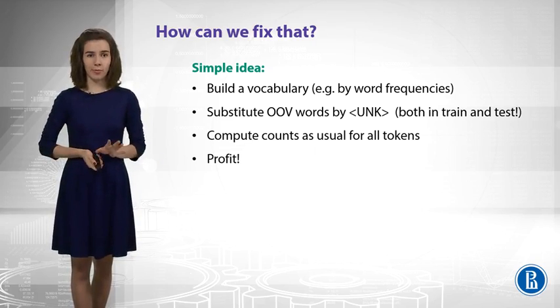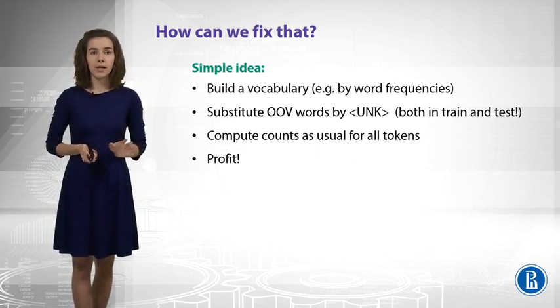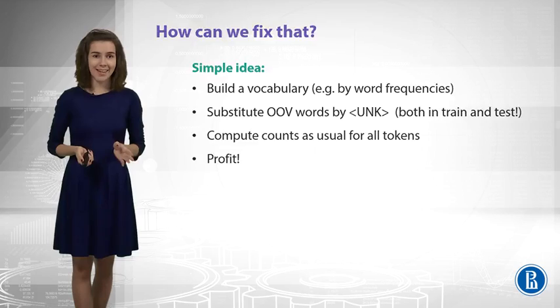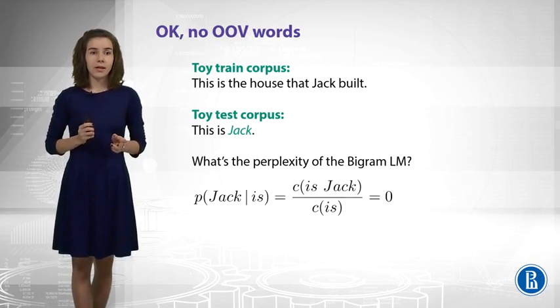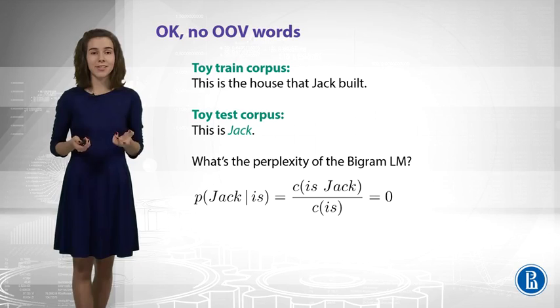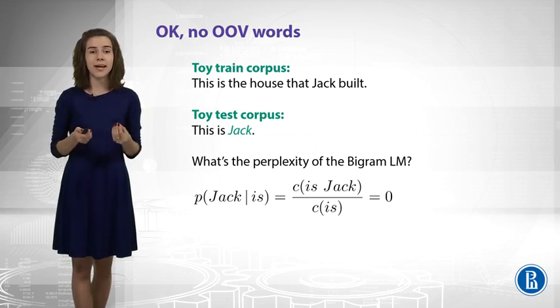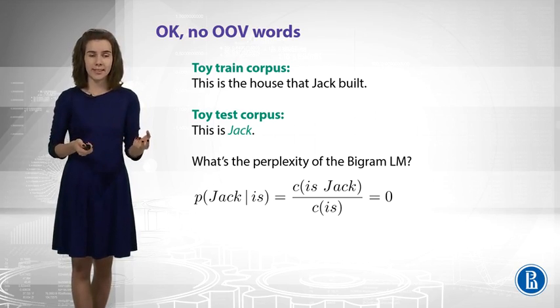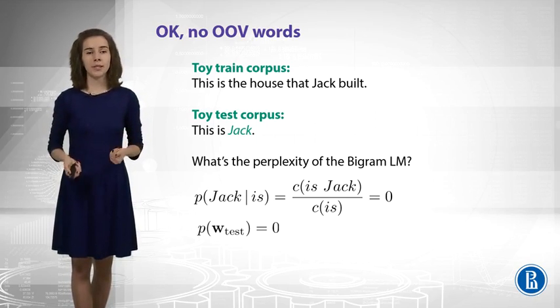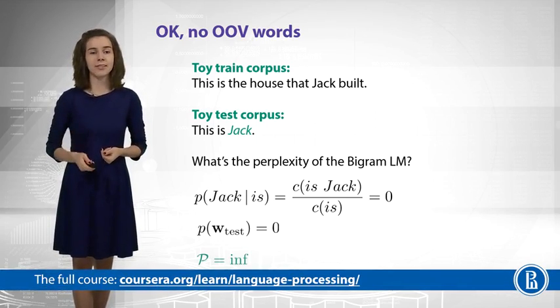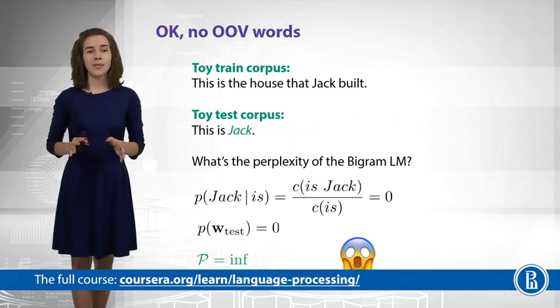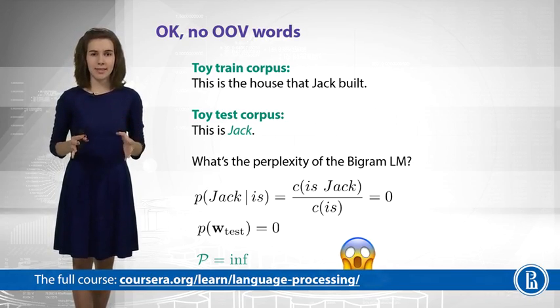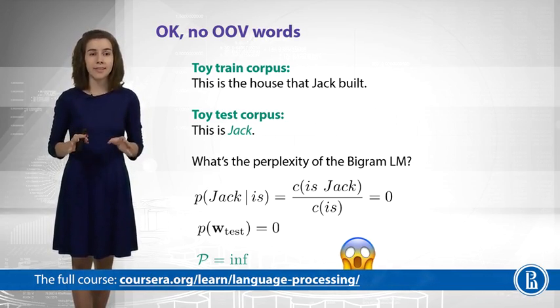Now, imagine we have no out-of-vocabulary words. We could fix that. Let's try to compute perplexity again. This is the toy data. What is the perplexity? The probability of some tokens is still zero because we do not see this bigram in our train data, which means the whole probability is zero, the perplexity is infinite, and this is again not what we like. For this case, we need to use some smoothing techniques. And this is exactly what our next video is about.